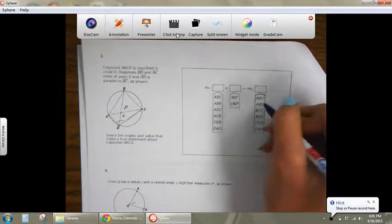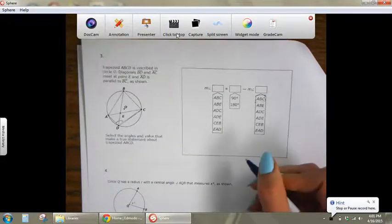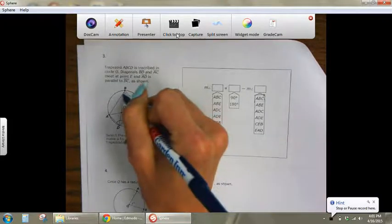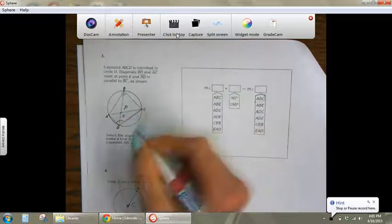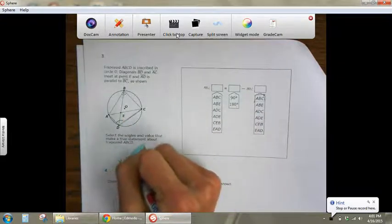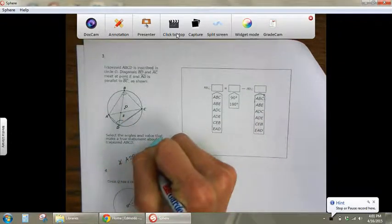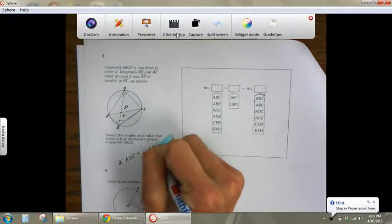So the info you really need is that your opposite angle of an inscribed quadrilateral will be supplementary. So basically angle A, D, C plus angle A, B, C would give us 180.